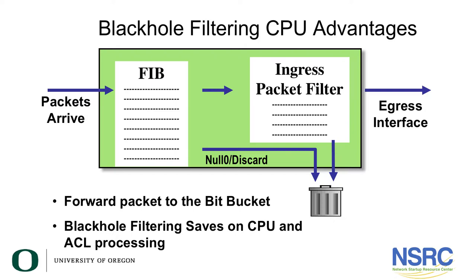This slide shows how black hole filtering gives you a CPU advantage over packet filters. In a router, you have a forwarding information base (FIB) that tells you the next-hop route to a destination, and you also have packet filters that can be used to drop certain traffic. With black hole filtering, when a packet arrives you simply look up the entry in the FIB, and if the next hop is the null interface it gets dropped — saving CPU cycles compared to ACL processing on Cisco routers.